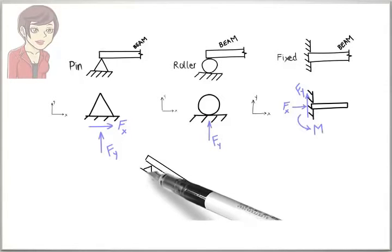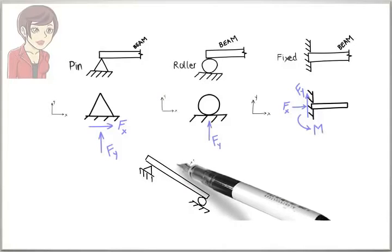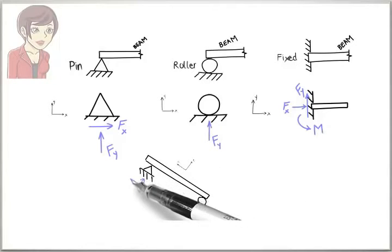To clarify, let's look at two examples. Suppose our beam has a pin support and a roller support. Here, there are three reaction forces: two forces associated with the pin support and one force associated with the roller support.